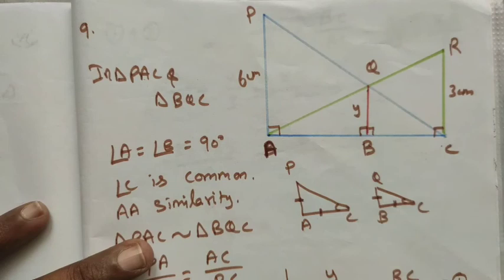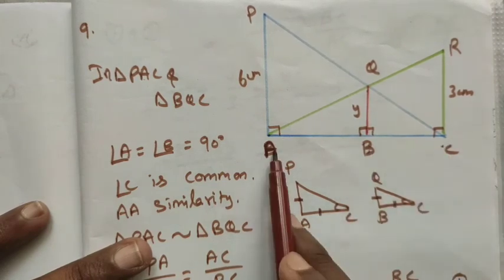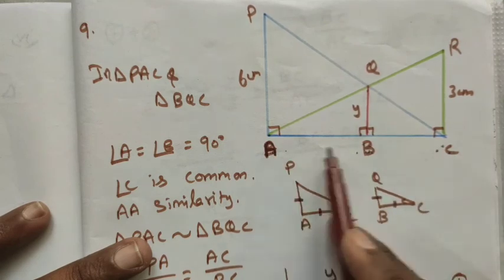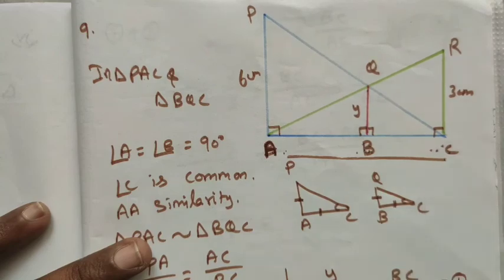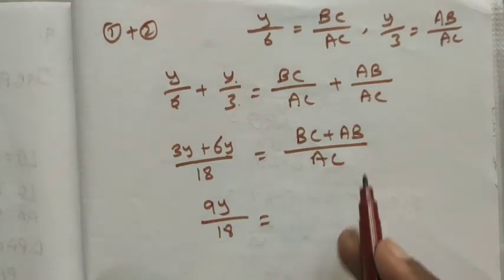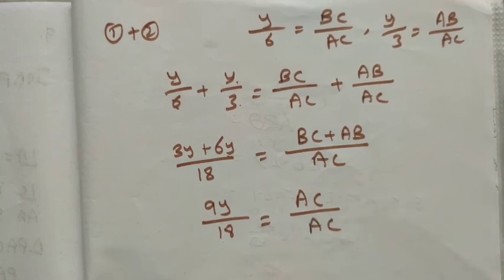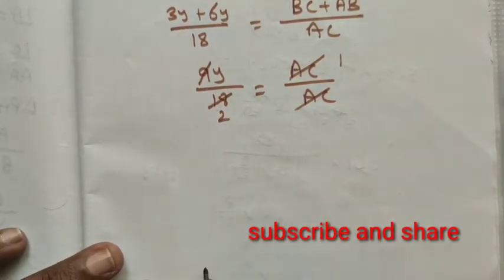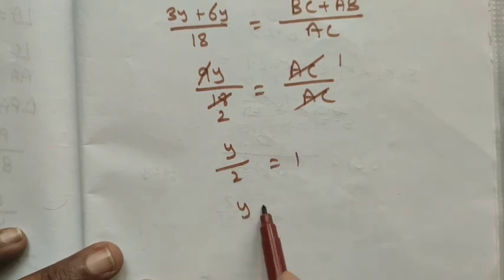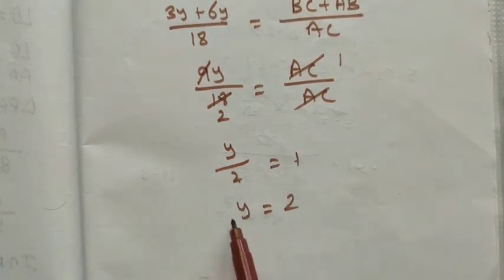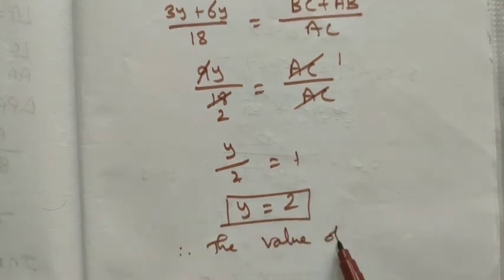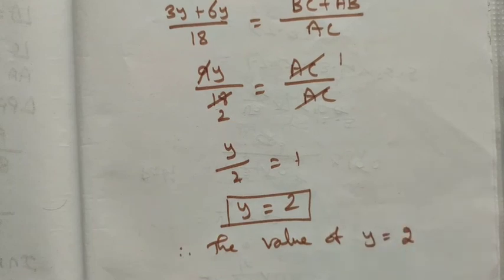On the right side, since the denominators are equal, we add the numerators: BC plus AB divided by AC. Now BC plus AB equals AC from the diagram, so BC plus AB over AC equals AC over AC equals 1. Therefore 9y divided by 18 equals 1, giving y divided by 2 equals 1, so y equals 2 meters.